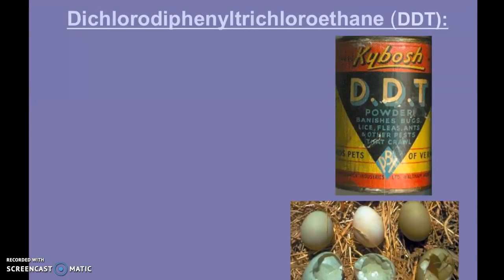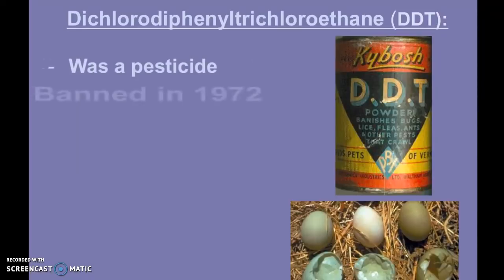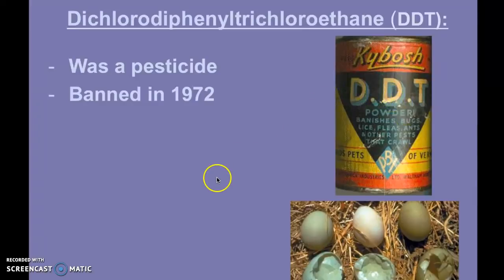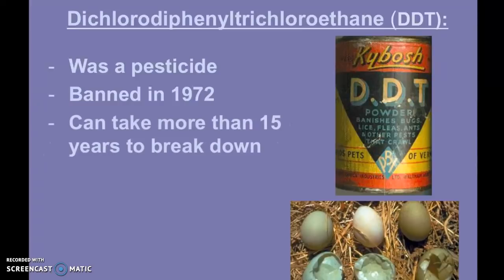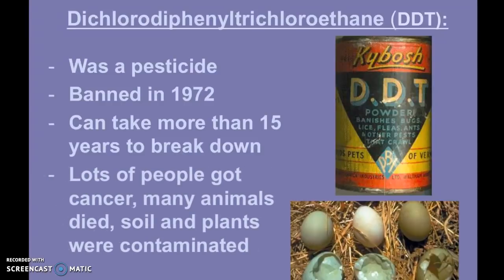Dichlorodiphenyltrichloroethane — DDT — you'll probably have some questions on your EOG about DDT or different types of pesticides. DDT is a pesticide that was banned in the 70s. As you can see on the canister, it was used to get rid of bugs, lice, fleas, ants, and other pests. It was really commonly used — a very strong and harmful pesticide. It could take more than 15 years to start breaking down, and it was sprinkled around people's homes and all over the place because it was marketed as something really safe and effective.